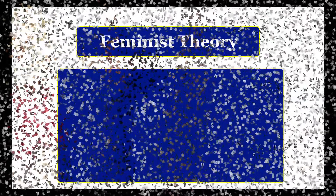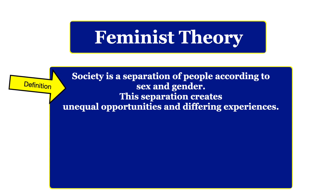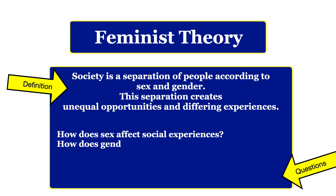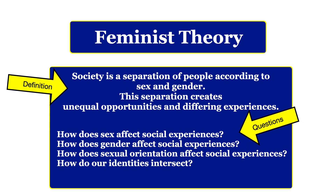So what is the feminist theory? Feminists see society as a separation of people according to our sex assignment and our gender identity. Feminists believe that this separation creates unequal opportunities and differing experiences for people based on their sex and gender identities. The questions we want to look at with this theory are: how does sex affect social experiences? How does one's gender affect social experiences? How does sexual orientation affect our social experiences? And lastly, how do these identities intersect in ways that allow us to have an increase or decrease in opportunities?